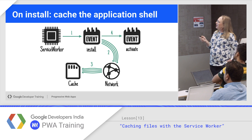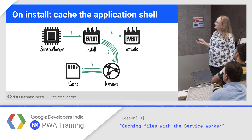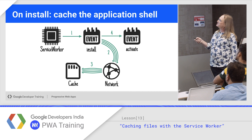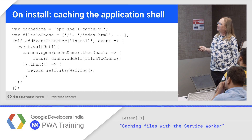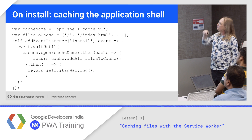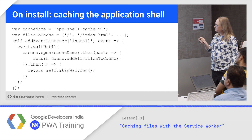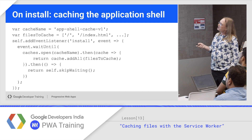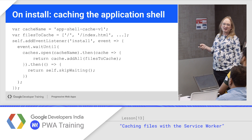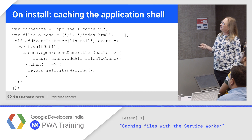On install, the example of caching the application shell: the service worker fires an install event, you grab everything from the network, jam it in the cache, and then you get to activate. Here's how we wrote it — listen for the install event, use waitUntil to keep things alive, open the cache, addAll, and then self.skipWaiting.